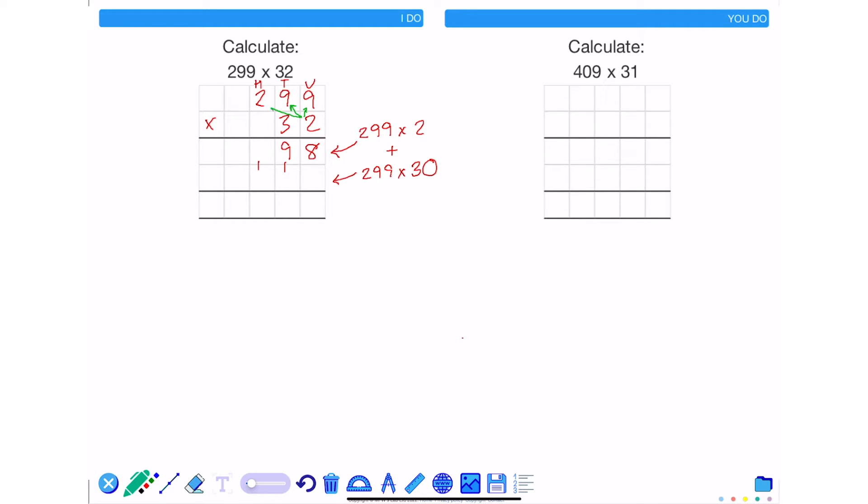2 times by 2 is 4. Add on the 1 I carried is 5. So 2 times 299 is 598.